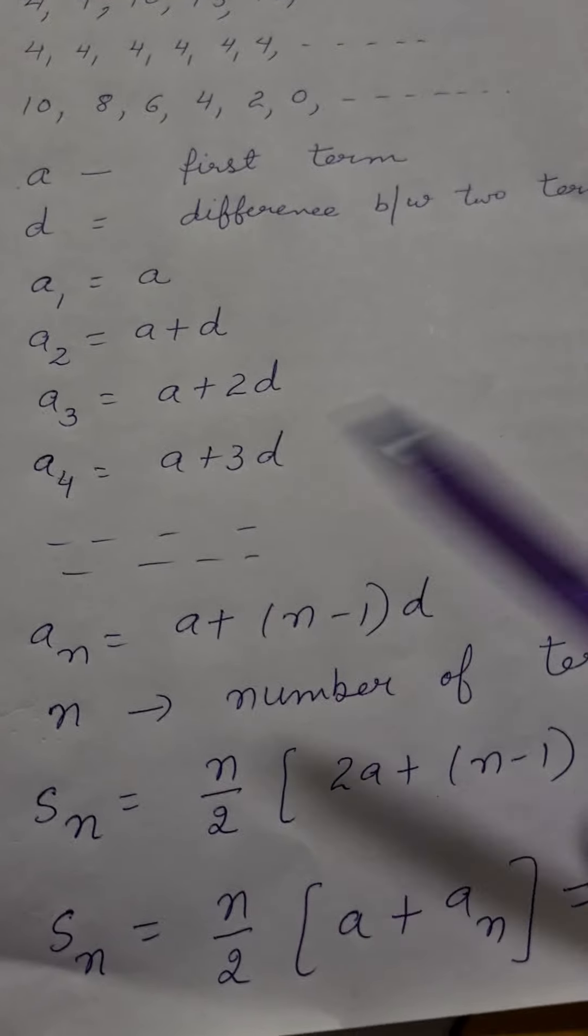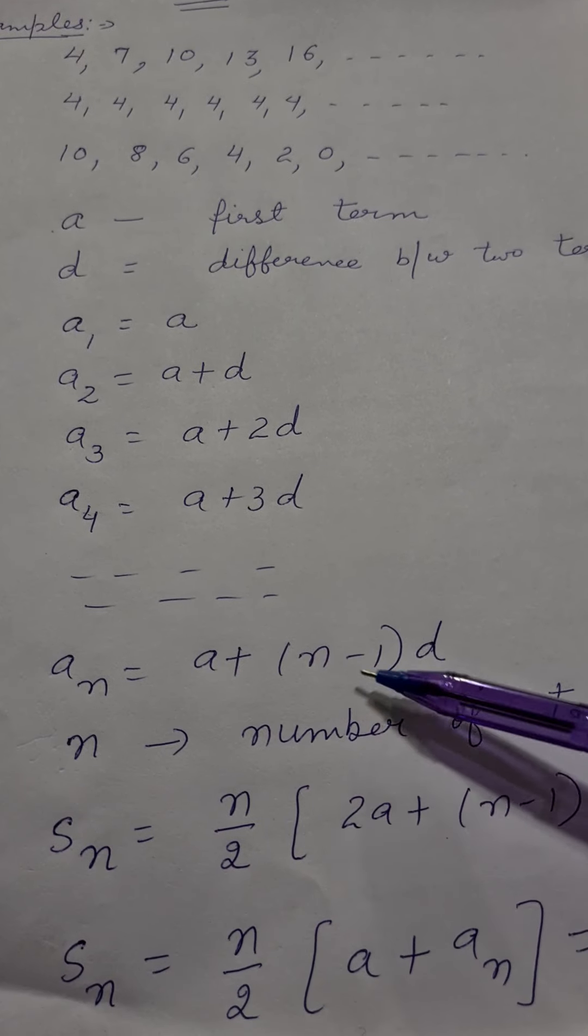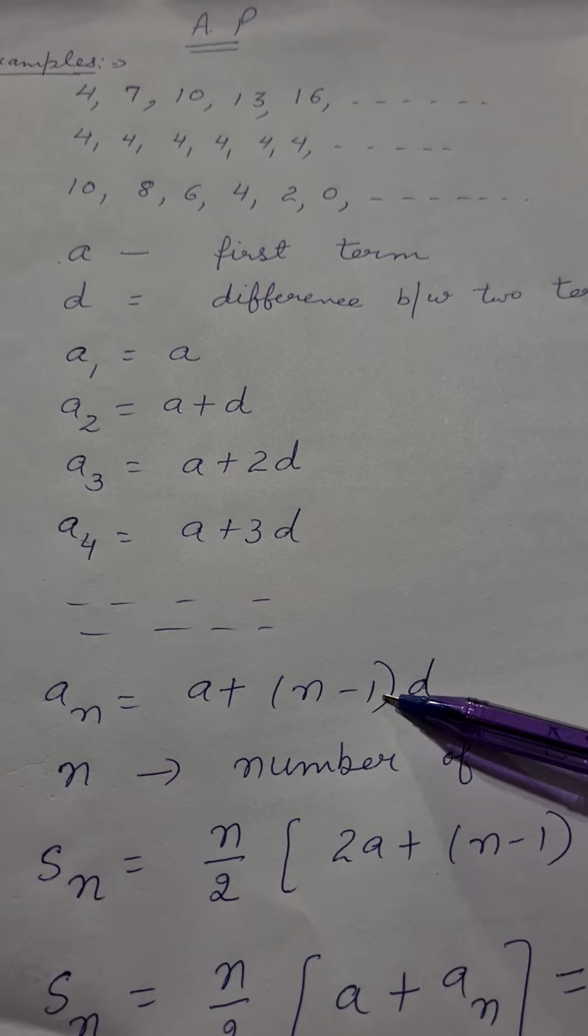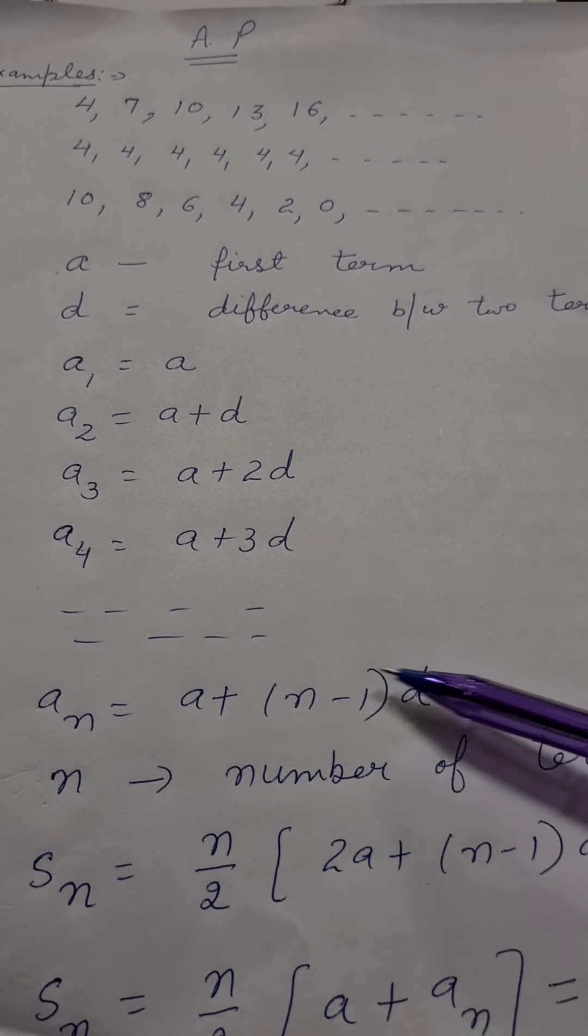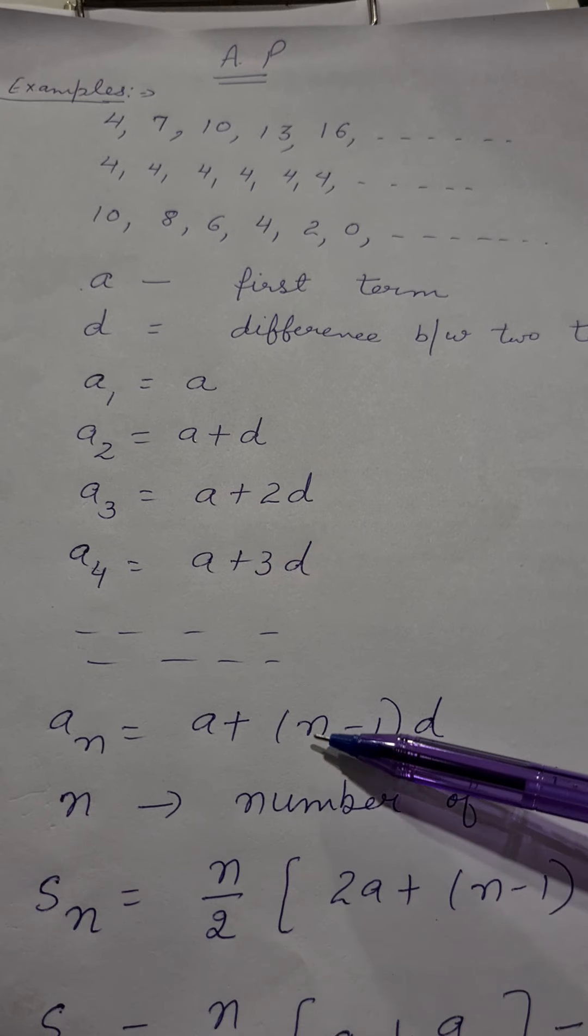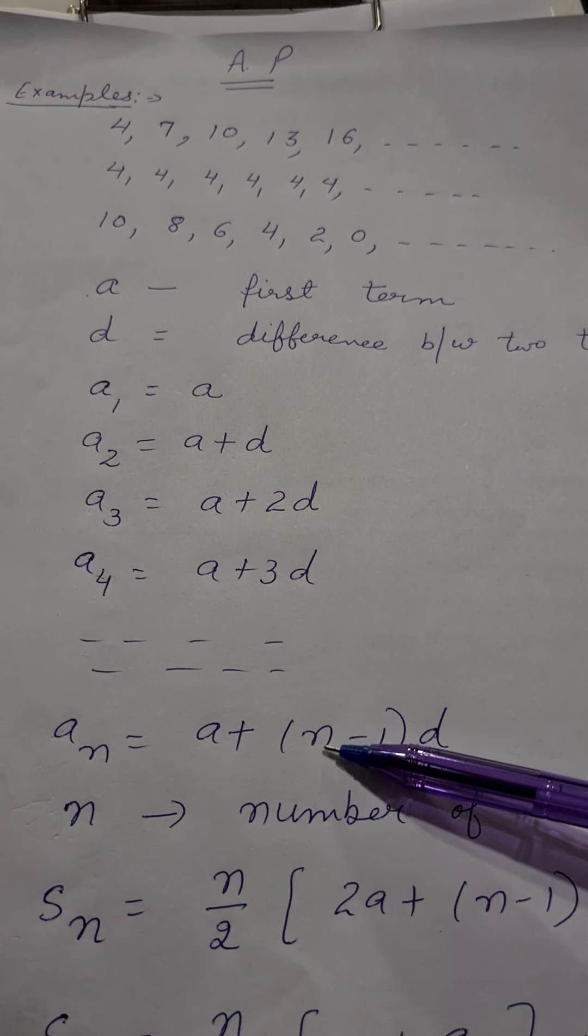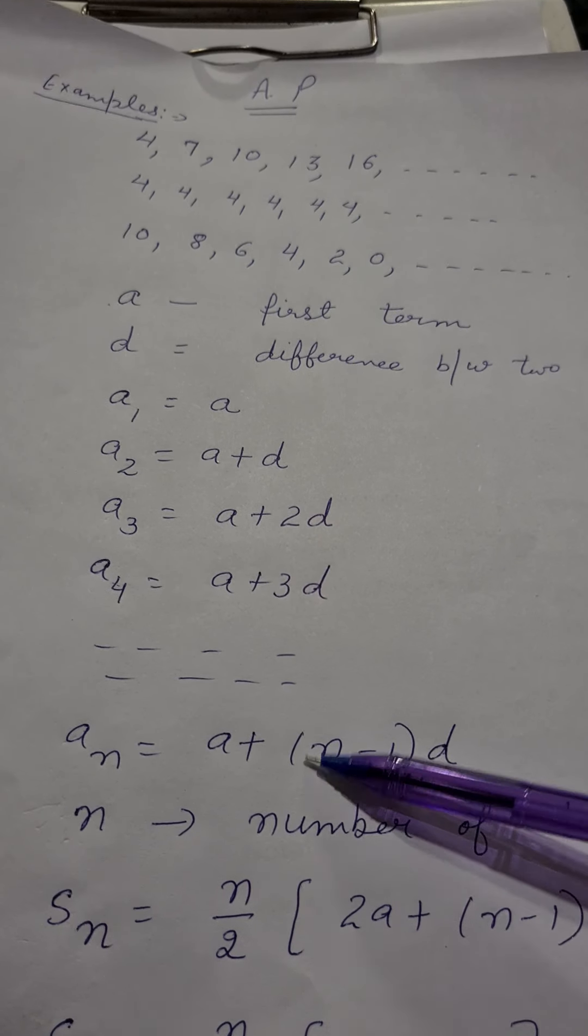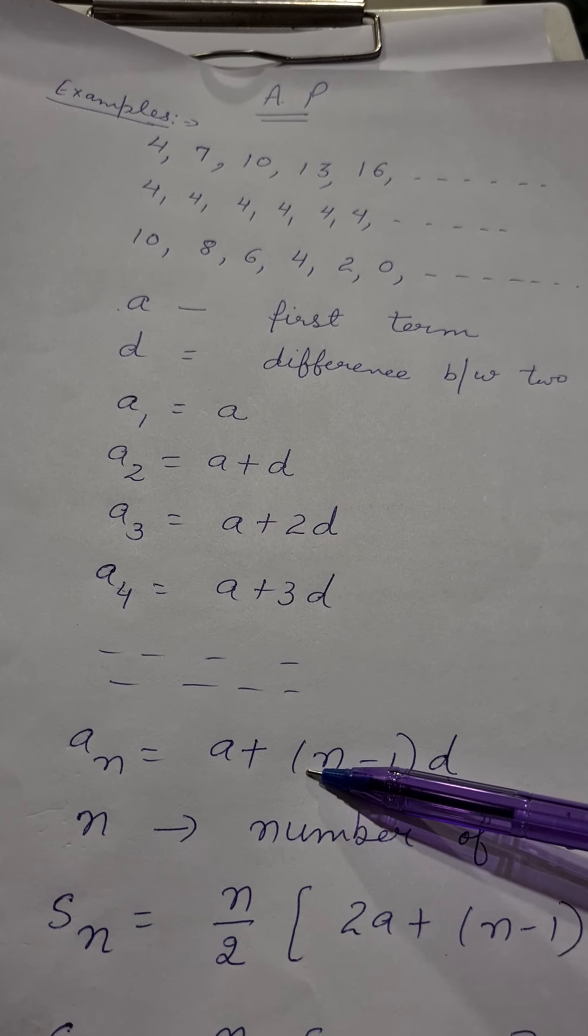If we have to do the first number n minus 1 d plus. This is our formula directly. We can put this here or an = a + (n-1)d. This is the formula.